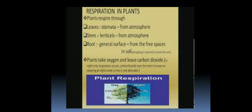Plants respire through their whole body. In terms of exchange of respiratory gases, plants respire through leaves, stems, and roots. Stomata are found on the epidermal surface of the leaf and help in the exchange of respiratory gases. Stomata remain open during the day but close at night. Lenticels are minute pore-like structures present on stems or tubers and help in the exchange of respiratory gases even at night.